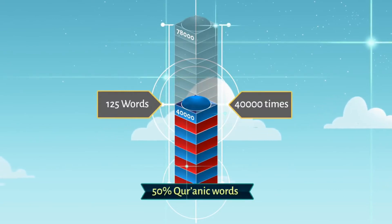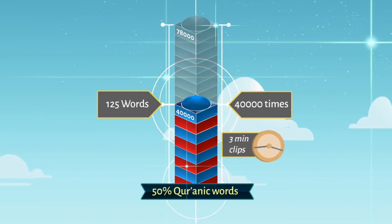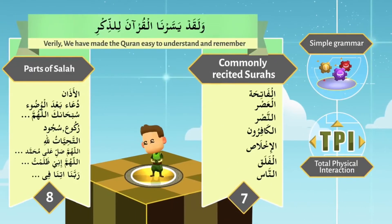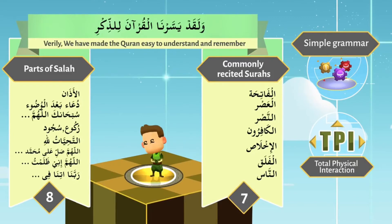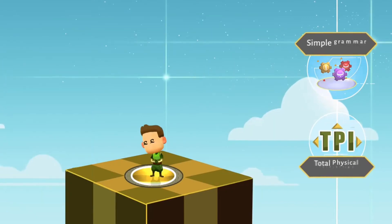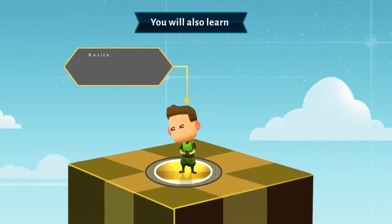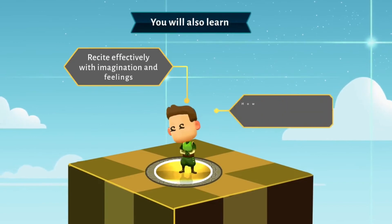Along with extremely simple grammar using TPI, you learn 125 words that occur 40,000 times — 50% or half the words in every line — all of that in just 3-minute clips, along with 7 surahs and adhkaar of salah.